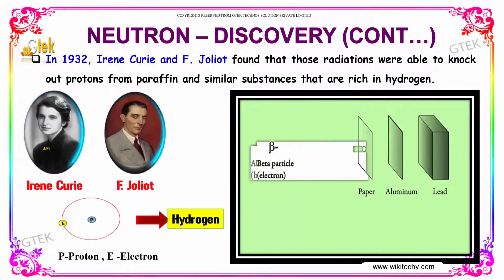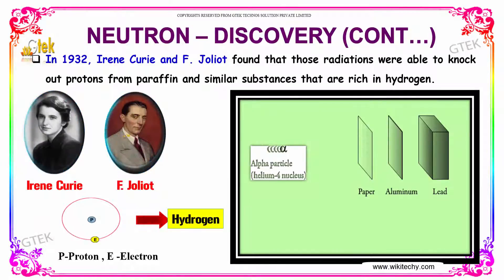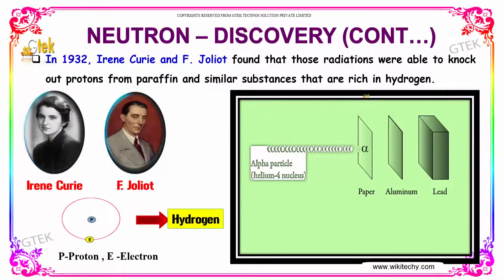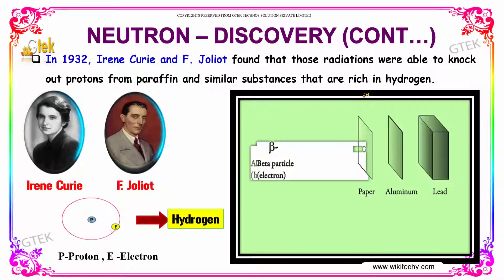In 1932, Irène Curie and Joliot found that these radiations were able to knock out protons from paraffin and similar substances that are rich in hydrogen.